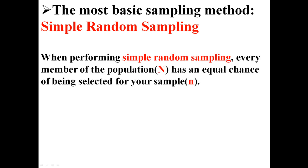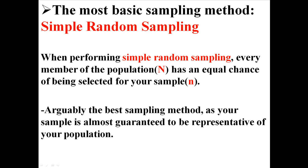Now the most basic sampling method is called simple random sampling. When performing simple random sampling, every member of the population has an equal chance of being selected for your sample. Arguably the best sampling method because your sample is almost guaranteed to be representative of the population, but it's hardly ever used because it's too impractical. In order to do this properly, you have to know who every single person in your population is, and that's often impossible.